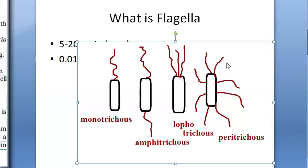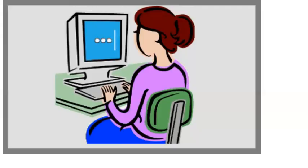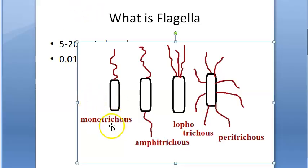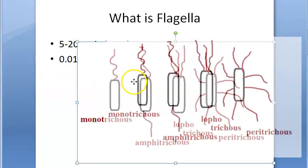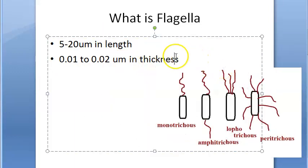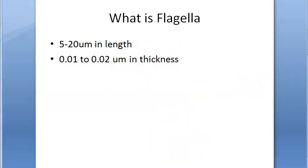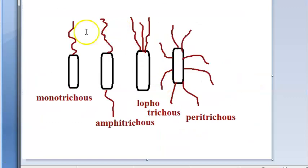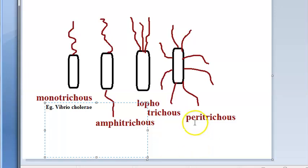First, monotrichous - a single polar flagellum. Who has this kind of flagella? Monotrichous example is Vibrio cholerae. Also Pseudomonas and Campylobacter all have monotrichous flagella.